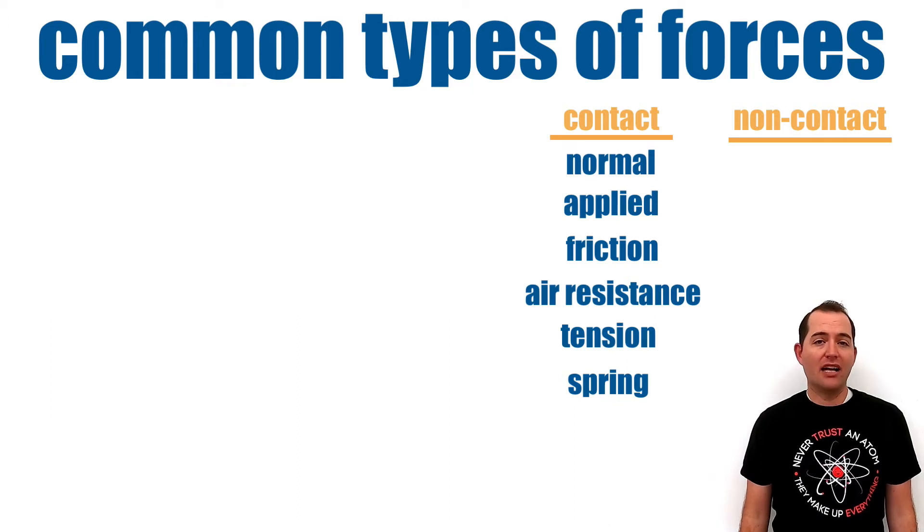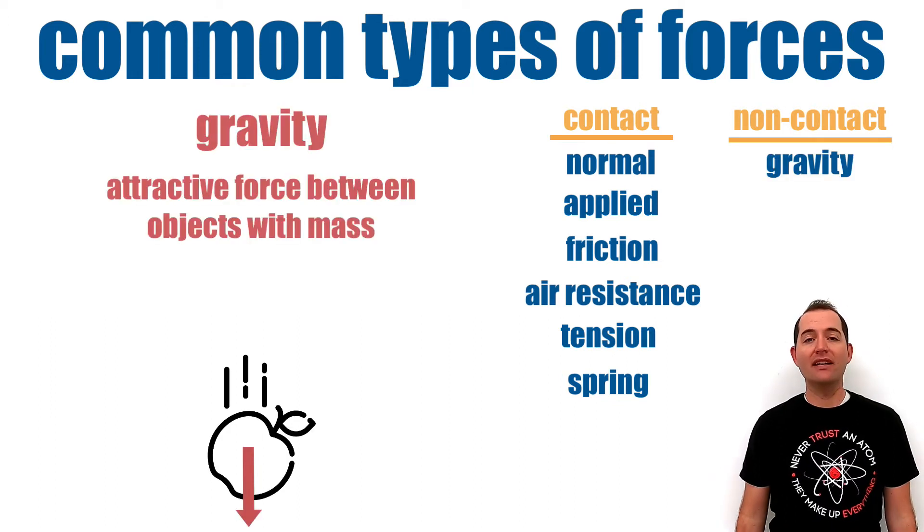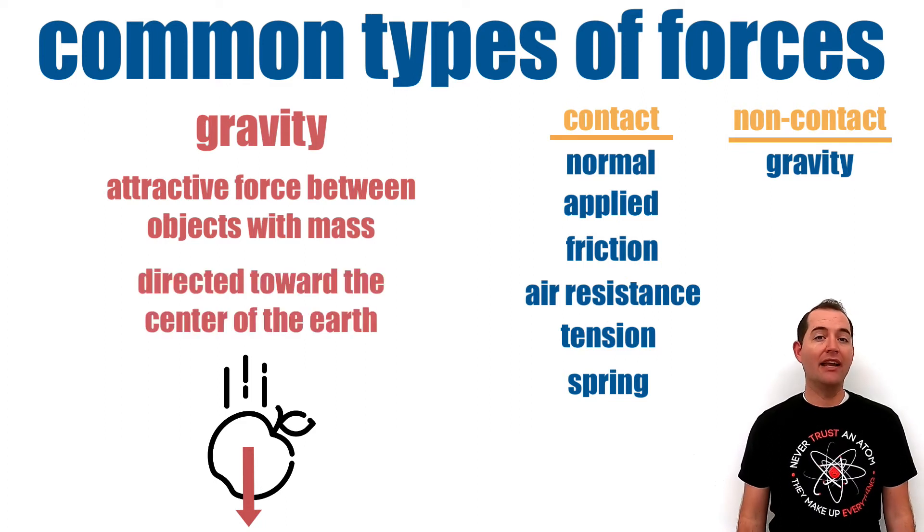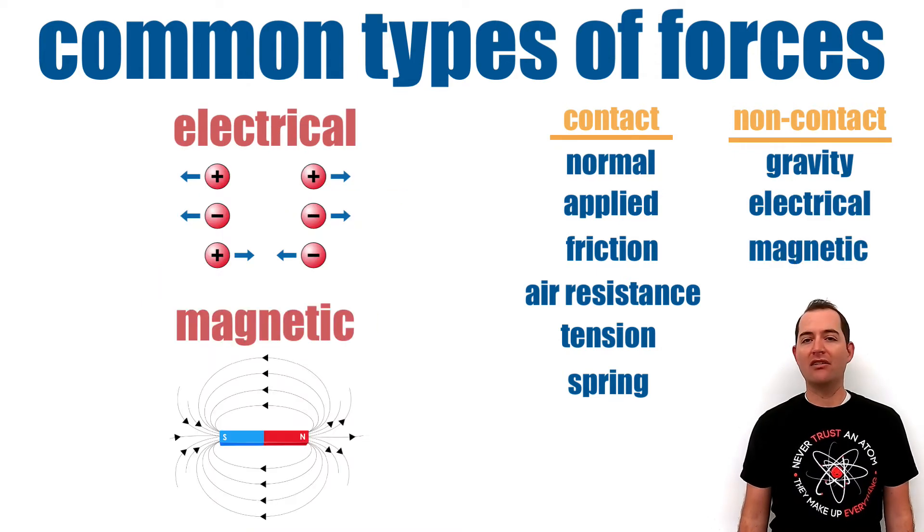The most common non-contact force is gravity. Gravity is the attractive force between any two objects with mass and on the earth, this is always directed toward the center of the earth. Electrical and magnetic forces are also non-contact forces.